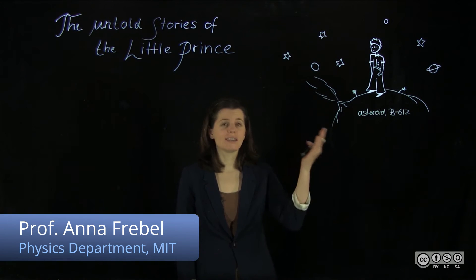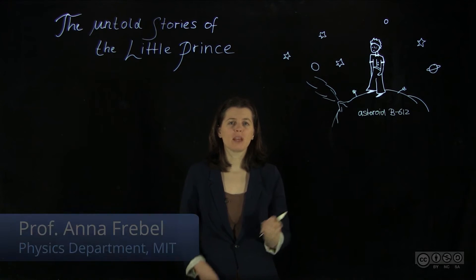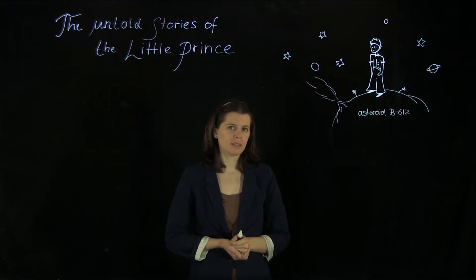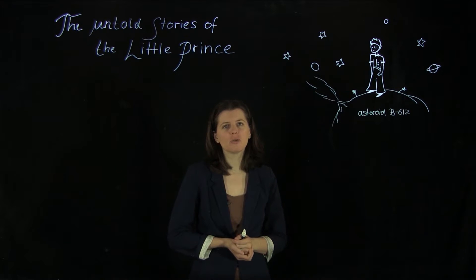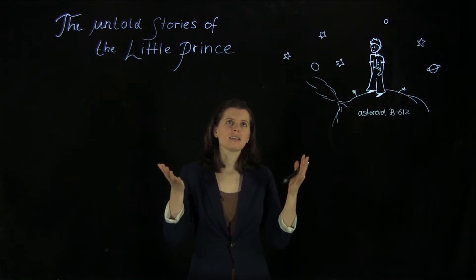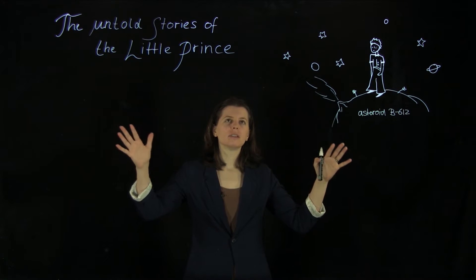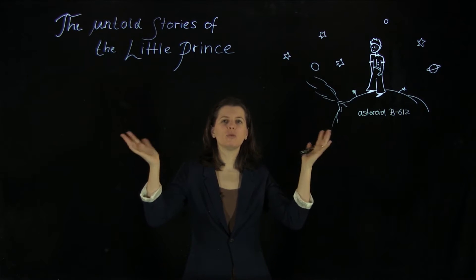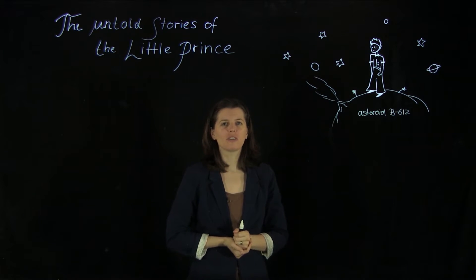The Little Prince lives on his asteroid B612, and he really likes to watch the stars. What he really wishes for is to watch the stars while floating, to have the best possible view and to just immerse himself in the stars.